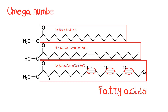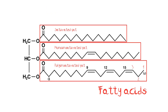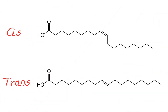Unsaturated fatty acids may be missing two hydrogen atoms, making them monounsaturated, or more than two, making them polyunsaturated. Unsaturated fats are classed by which carbon atom is the first to be missing a hydrogen atom. In omega-3 fatty acids it is the third carbon atom from the end; in omega-6 fatty acids it is the sixth carbon atom, and so on. Unsaturated fatty acids can also be divided into cis and trans fatty acids, according to how this carbon atom missing a hydrogen kinks the chain.